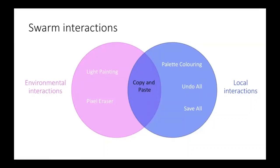Here are the six painting modes divided by which interaction type they use. In light painting mode, the human changes the color of the light projected onto the swarm to tell the robots which LED color value to show. In pixel eraser mode, the human changes the ambient light level around the Kilobots to tell them whether to turn off their LED.